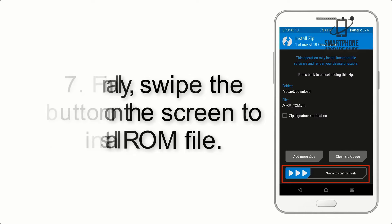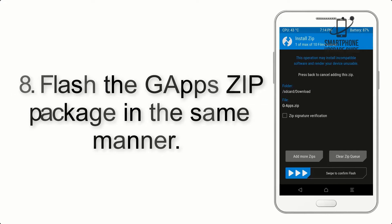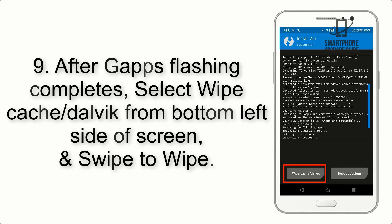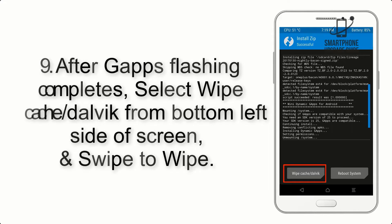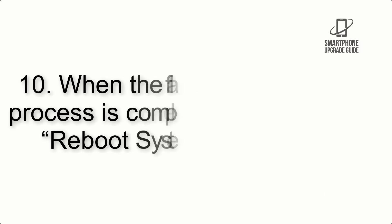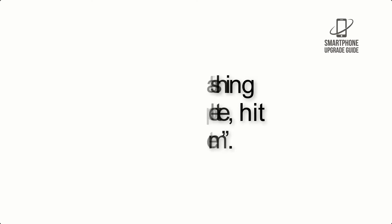Step 7: Swipe the button on the screen to install the ROM file. Step 8: Flash the gapps zip package in the same manner. Step 9: After gapps flashing completes, select Wipe Cache and Dalvik from the bottom left side of the screen and swipe to wipe. Step 10: When the flashing process is complete, hit Reboot System.